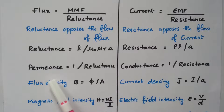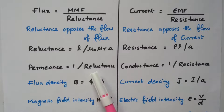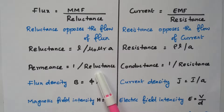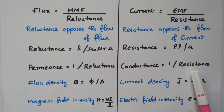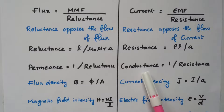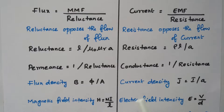Permeance is the reciprocal of reluctance (1 / reluctance). Similarly, conductance is the reciprocal of resistance. Both are reciprocal quantities in their respective circuits.